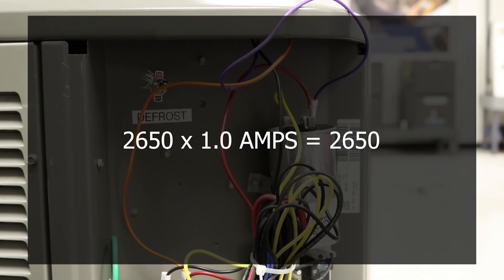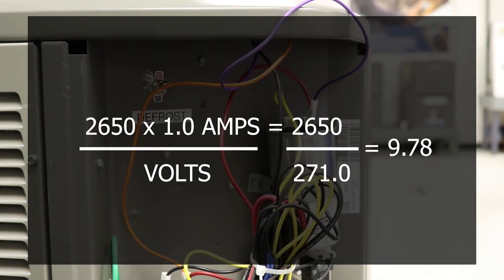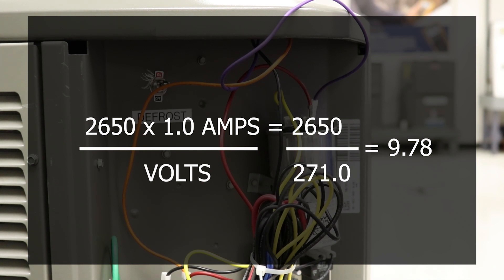So for the fan, we have 2650 times 1.0, which is obviously going to give us 2650 divided by that voltage, which was 271 volts. So that capacitor is running at 9.7 microfarads while it's in operation.